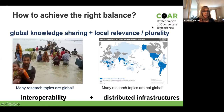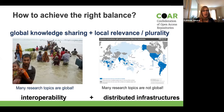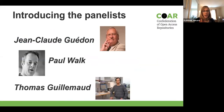So how can we get the right balance? What we want is a system that enables global knowledge sharing — it's very important that researchers around the world can share knowledge with each other. But we also want to support a system where local relevance, plurality, and local research priorities are supported. Many research topics are global, but many are domain specific, regional, or even very local. What we're proposing is to have very distributed infrastructures and services, while also ensuring interoperability across those infrastructures and services.